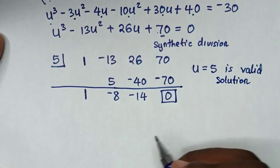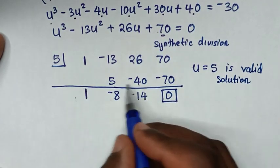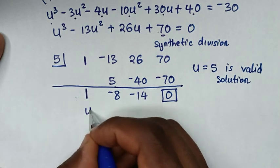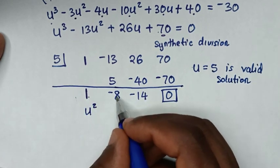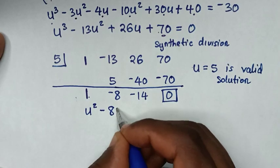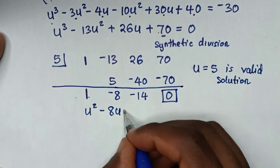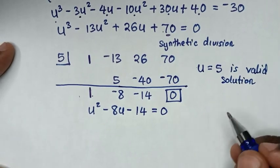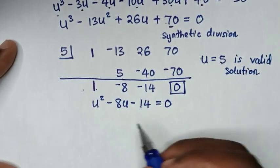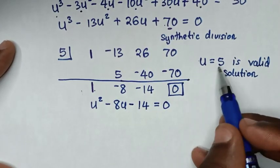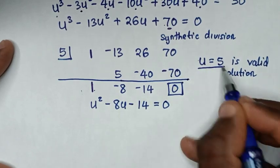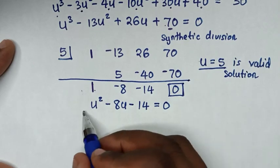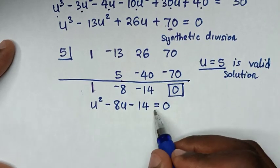The remaining quotient gives the quadratic equation u²-8u-14 = 0. We now find the other values of u from this quadratic.